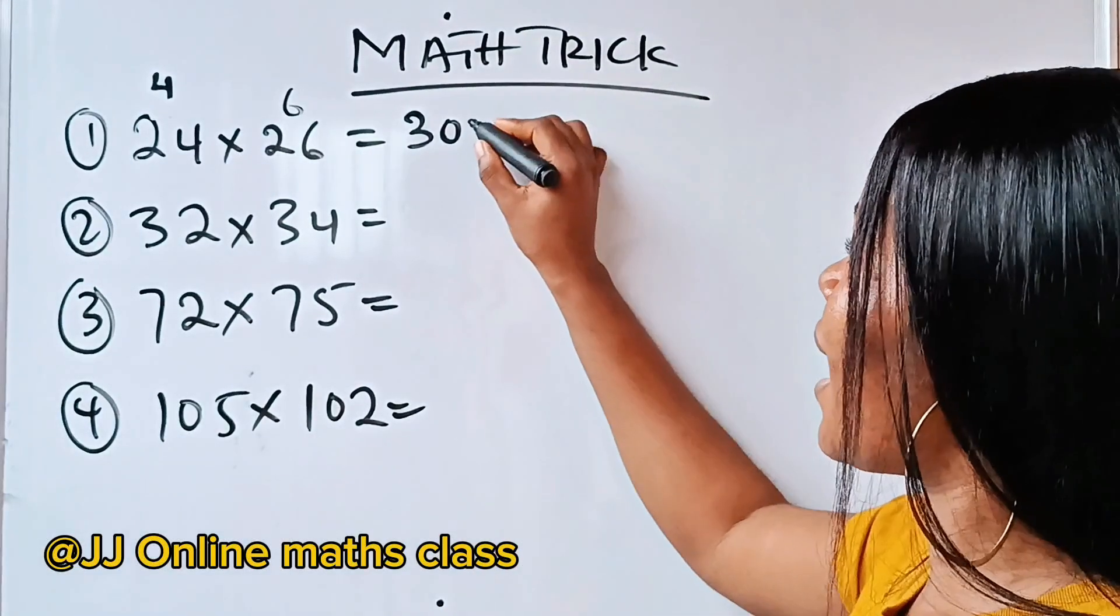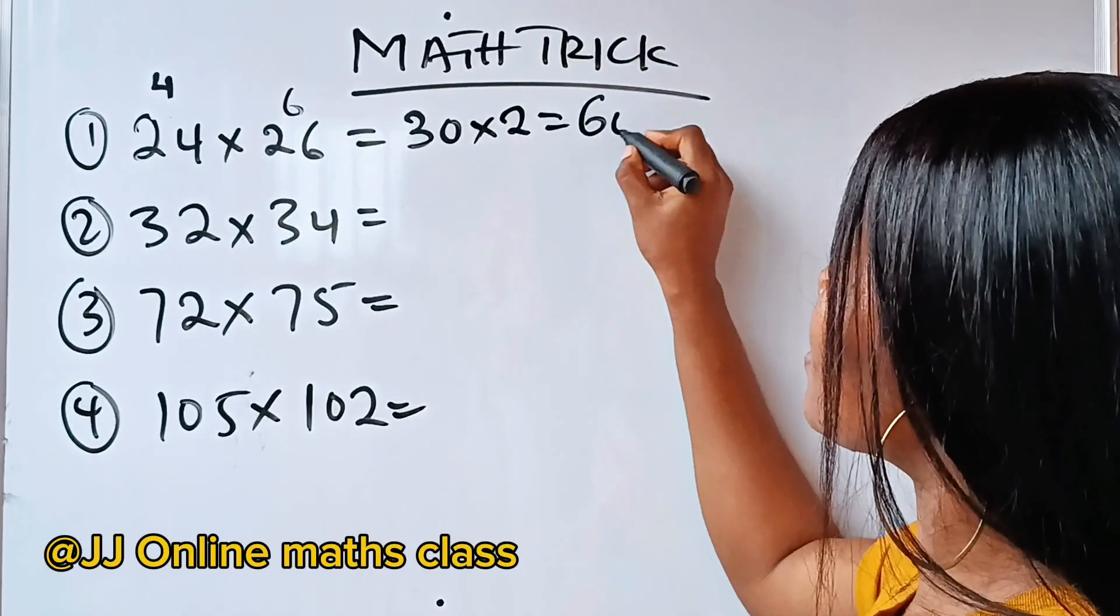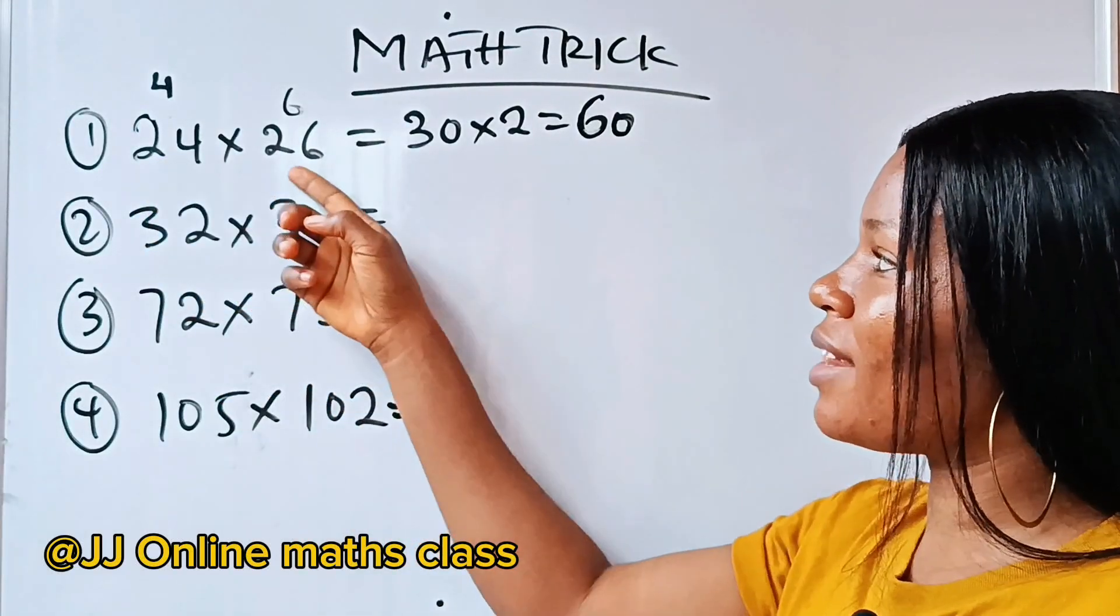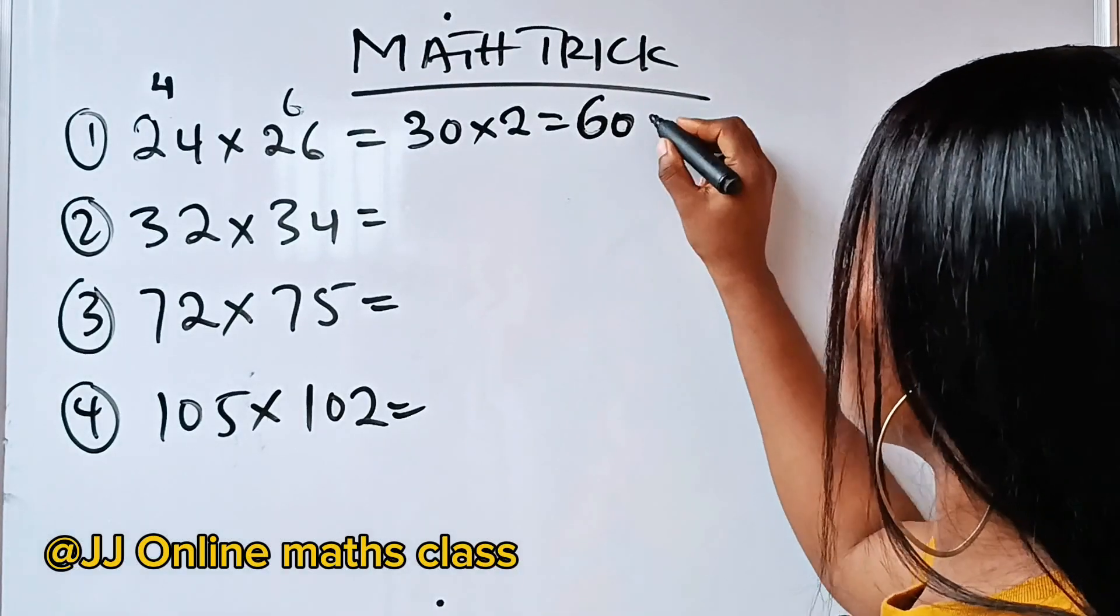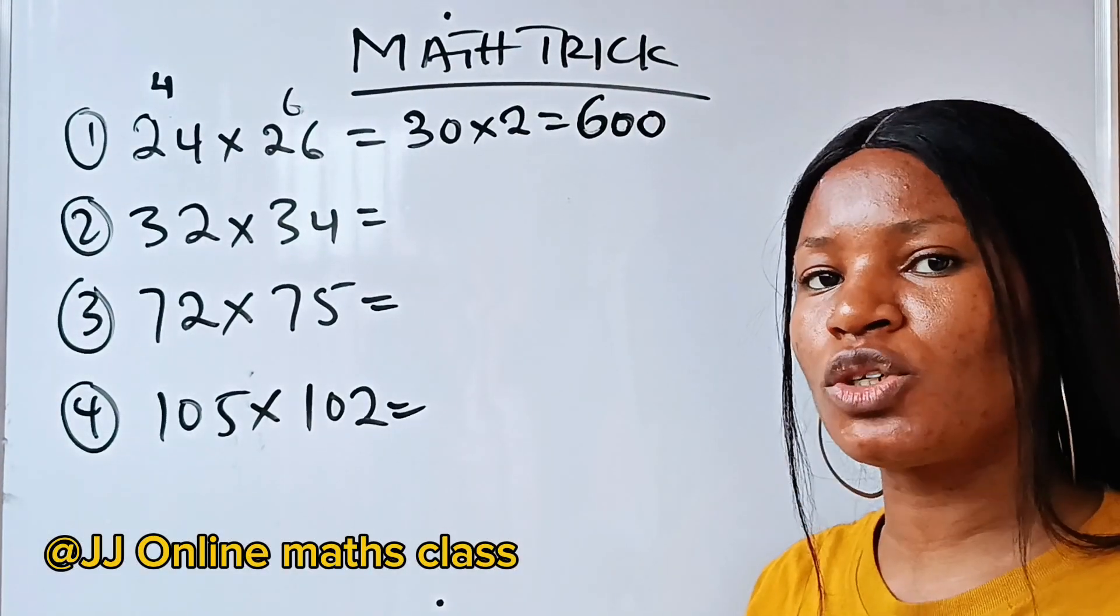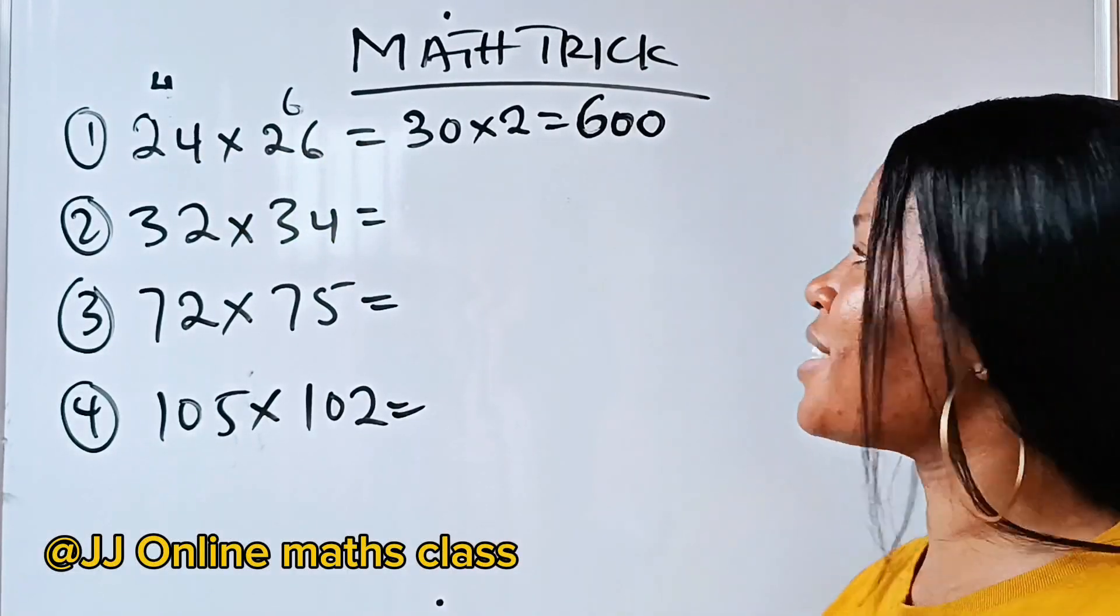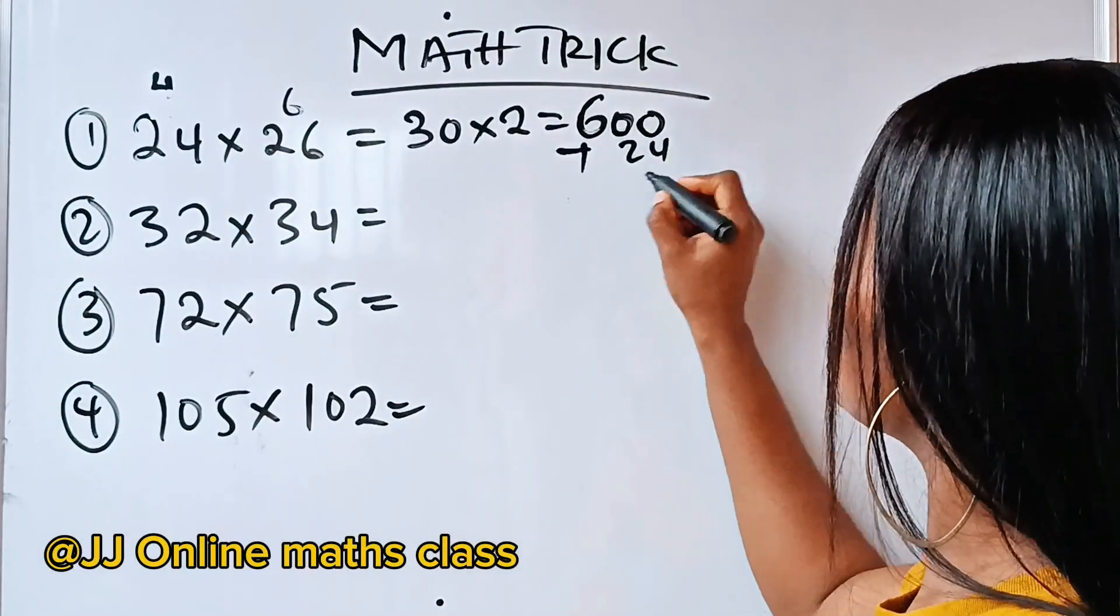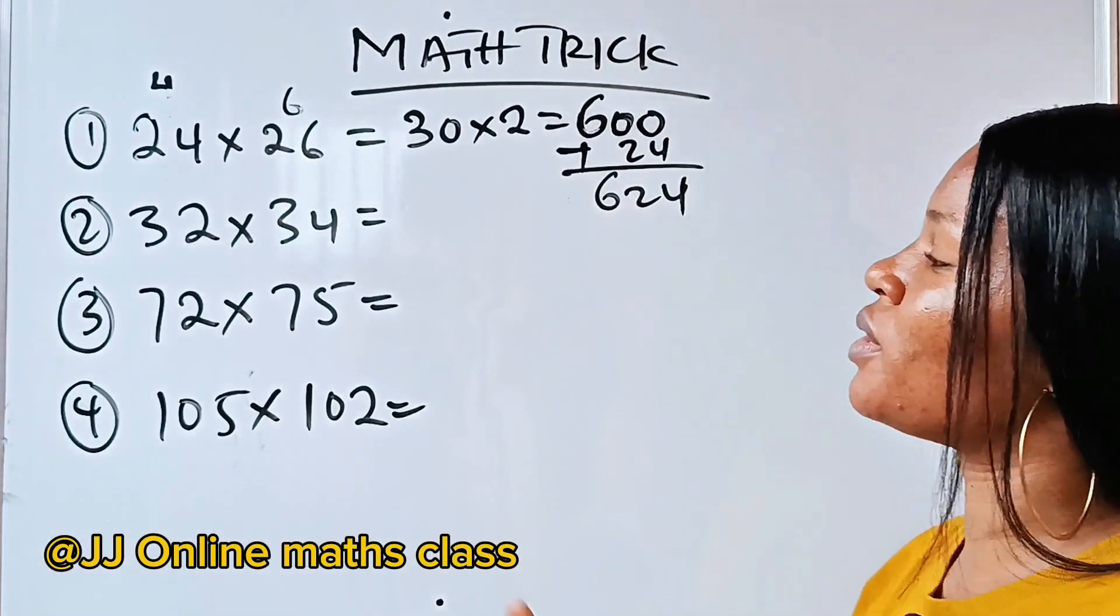Now, we are going to multiply this 30 by these two, and we have 60. Now, this and this are in tens place value, so we multiply this by 10 to give us 600. Then, you keep it aside. 4 times 6 will give us 24. Add that 24 to this and you get 624, which is our solution.